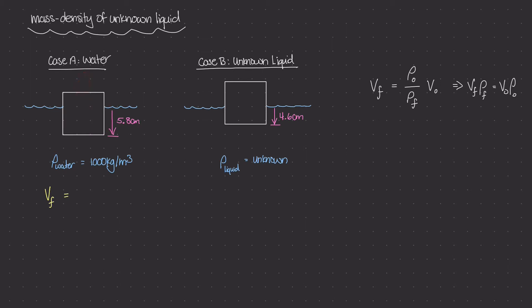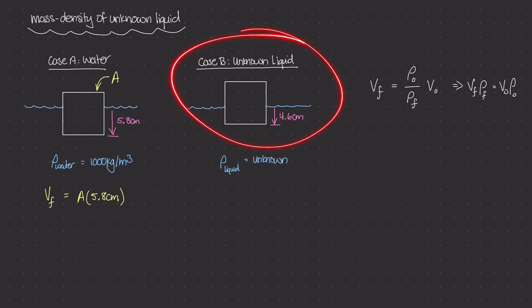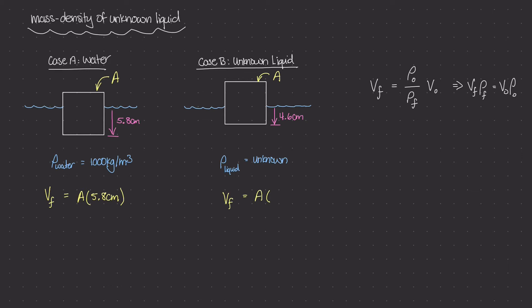If we look at the top of this block, I'll call the cross-sectional area of the top just area A — we can assume the top is a rectangle or square. The volume of fluid displaced is that area times the amount the block has moved down below the surface, which in case A is 5.8 centimeters. In case B with the unknown liquid, it's the same block so the cross-sectional area is still A, but the volume is A times 4.6 centimeters, because that's how much the block is submerged.